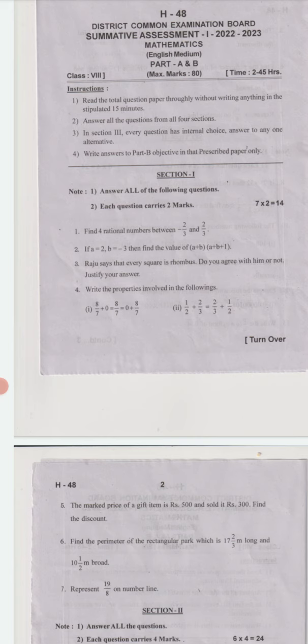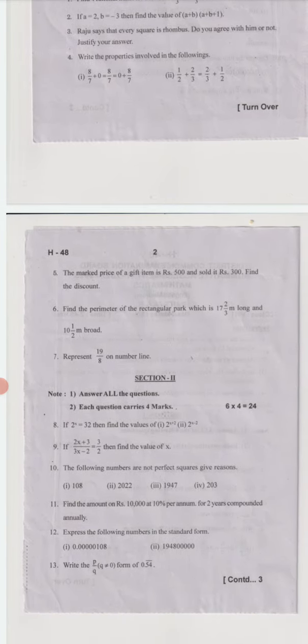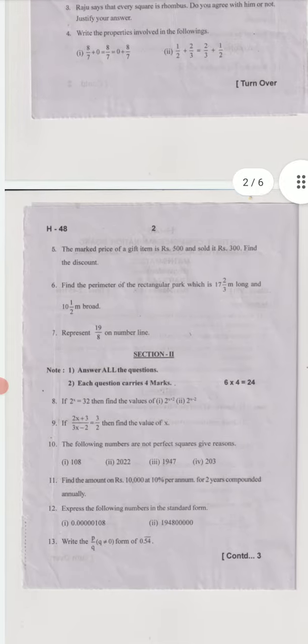We have properties like closure property, commutative property, distributive property, associative property. Which property is involved in this? We should write the name of the property. Fifth question: the marked price of a gift item is 500 rupees and sold at 300 rupees. Find the discount.